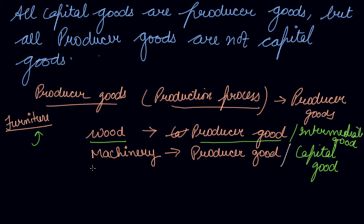So in this way, your capital goods are all producer goods, but your producer goods are not all capital goods. With this example, we have proved this statement.